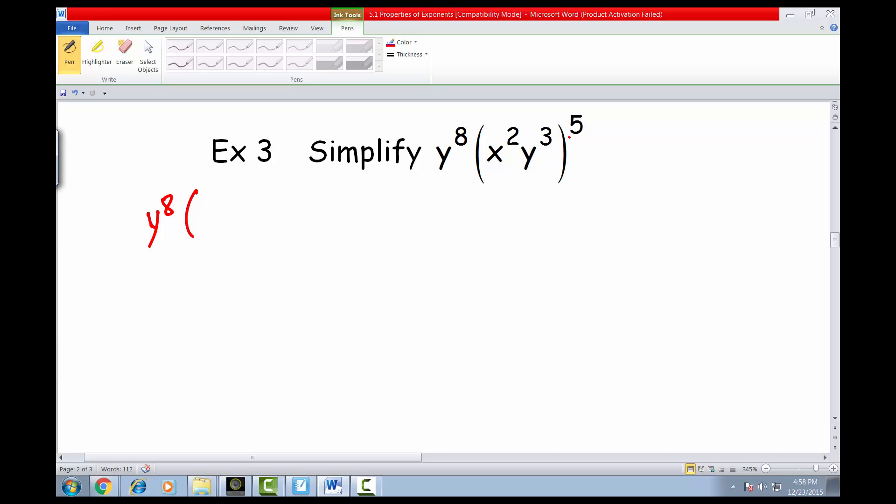With this part, we notice that we have a power property going on. A power to a power, so we're going to distribute that 5 to both items. We have this base x, its exponent is 2, and any time we have a power raised to a power like that, we're going to be multiplying those two powers. So we'd have x squared times 5. Same thing's going to happen for the y, we have y cubed times 5.